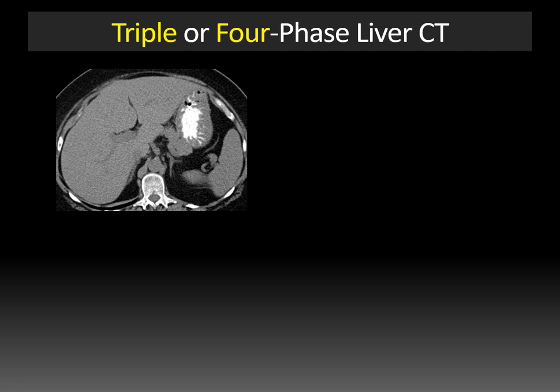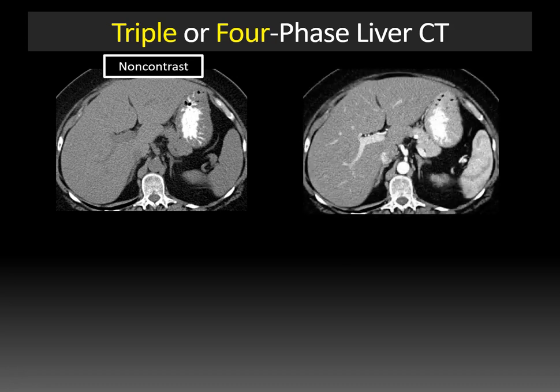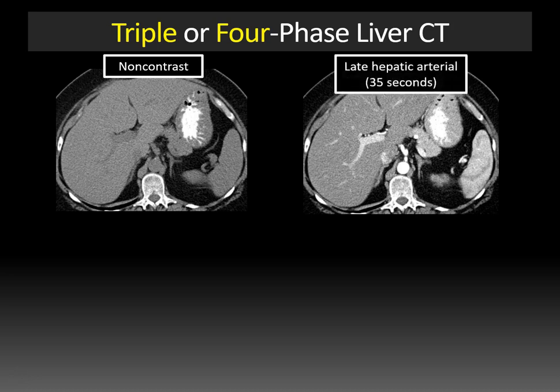A typical multi-phase liver CT protocol usually has three or four phases. Starting with the non-contrast phase, you can see that there's no contrast within the aorta. After contrast is given, the first phase we should see is the late hepatic arterial phase, which occurs about 35 seconds after the time of contrast injection.